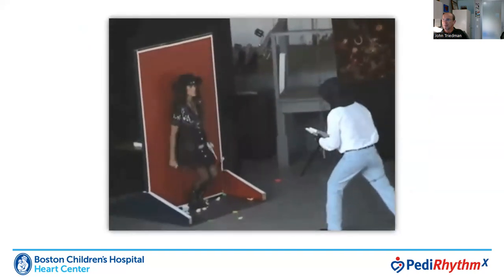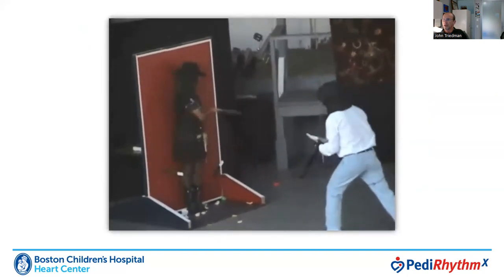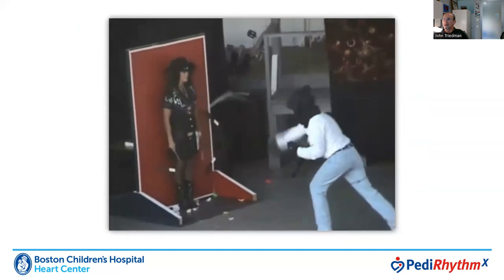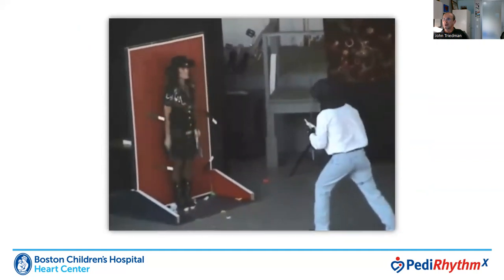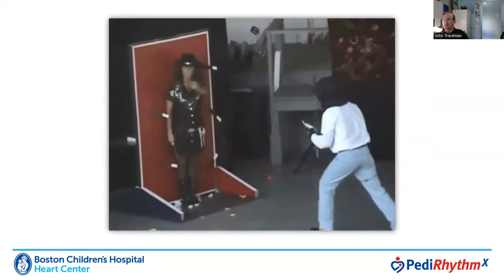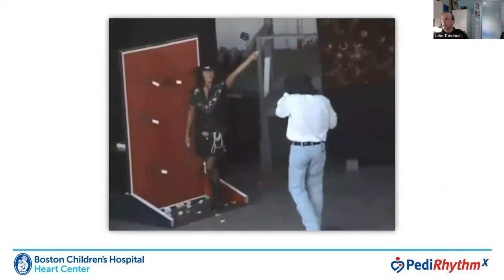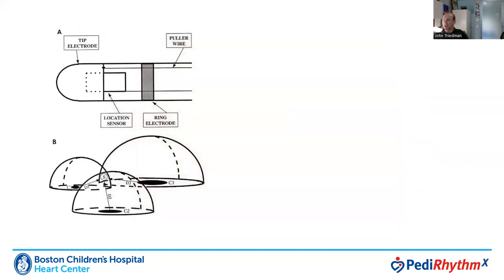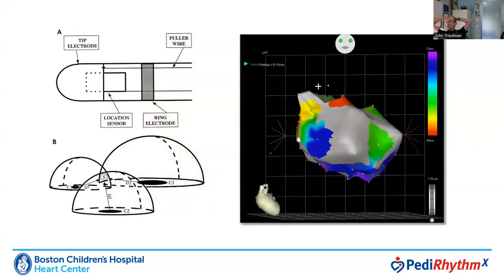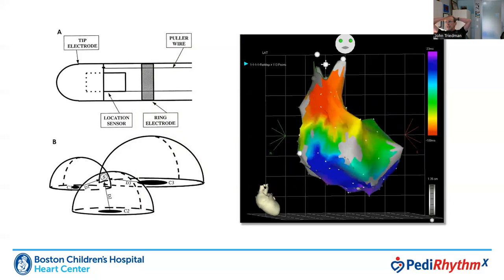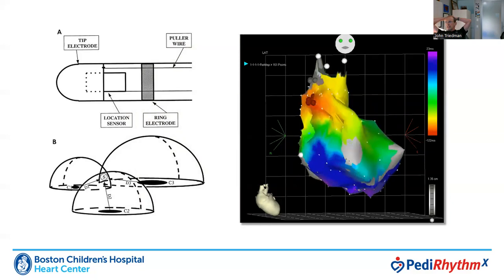To some extent at the time, we were shooting at these arrhythmias in the dark, as it were. It was quite challenging. The procedures were quite prolonged, and frankly, we were lucky that we didn't have as many complications as we might have. Our process was changed very substantially by the advent of electroanatomical mapping in the late 1990s, when it first became available to us.